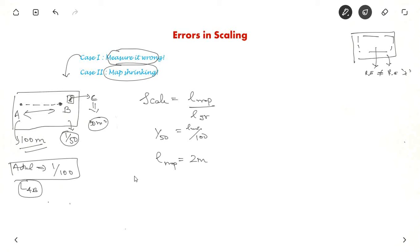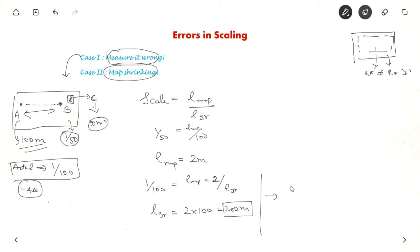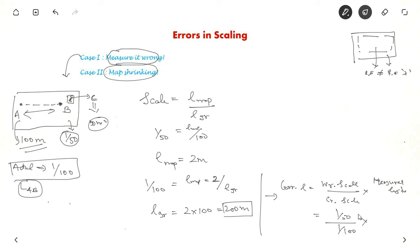Using scale = L_map / L_ground with the wrong scale 1/50: length on map = 100/50 = 2 meters. Now applying the actual scale 1/100: 1/100 = 2 / L_ground, so L_ground = 200 meters. In books you may also see the formula: correct length = (wrong scale / correct scale) × measured length = (1/50) / (1/100) × 100 = 200 meters. Either approach gives the same answer.